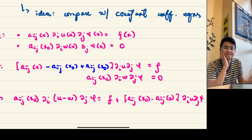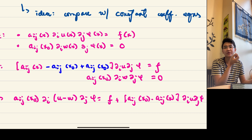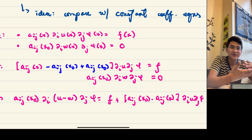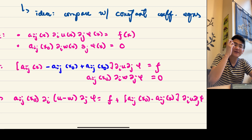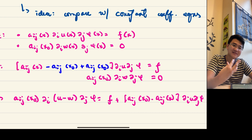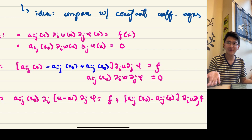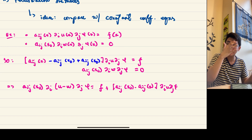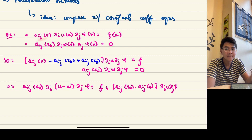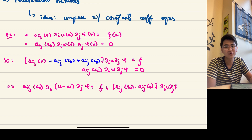The idea is that solutions to our variable-coefficient equation are 'close' to solutions of constant coefficient equations when the coefficients don't vary much — hence the name perturbation methods. This requires some continuity assumption on A, because that's where the perturbation argument happens. We need A(x) to be close to A(x_0) for x near x_0.